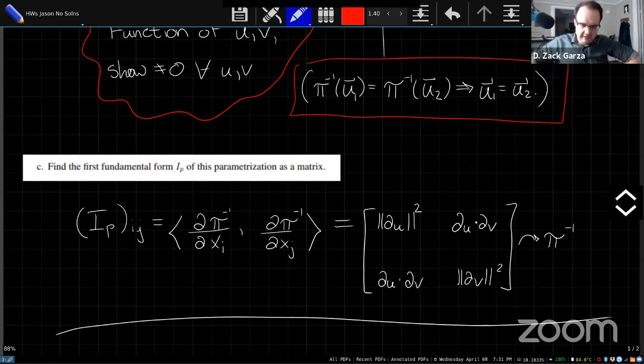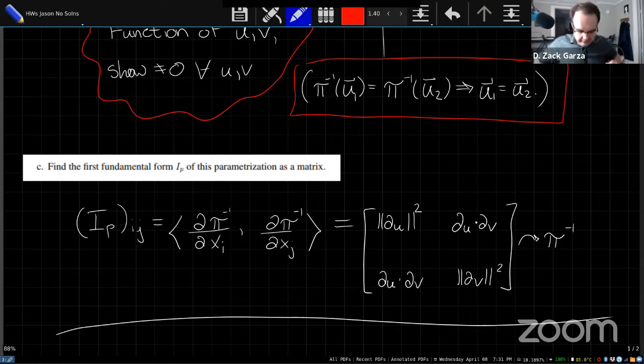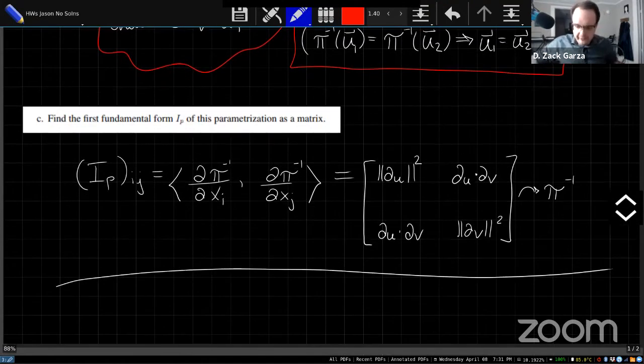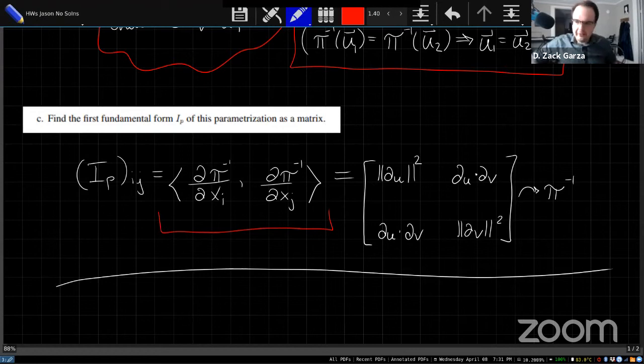The third part of this now asks us to compute the first fundamental form Ip of this parameterization as a matrix. And this is, I think, covered pretty well in the notes. This ends up essentially being a computation. But just remember that the first fundamental form is this matrix where we're just taking all of these inner products of the partial of your map with respect to one variable, against the partial of your map with respect to another variable. And so this thing should be a symmetric matrix, because the partials commute. So the top right corner, in this case, we only have two variables to worry about, u and v.